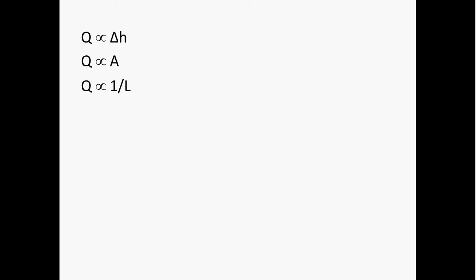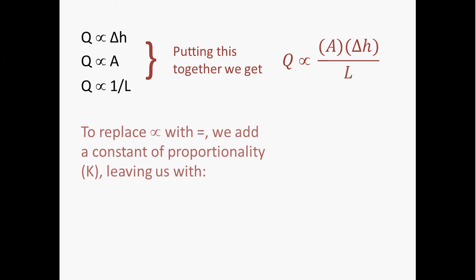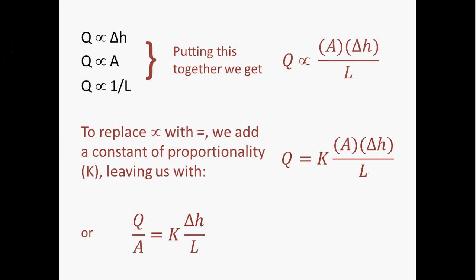These relationships summarize what we've discussed: flow is directly proportional to the difference in hydraulic head between each end of the tube, proportional to the area of the column, and inversely proportional to the length of the column. Putting this together, we can replace the proportional sign with an equal sign by adding a constant of proportionality, K. Rearranging slightly, we end up with this form of the equation — and that is Darcy's Law.